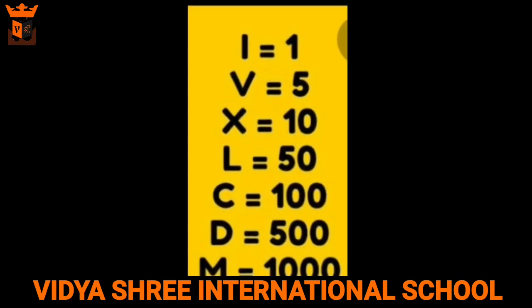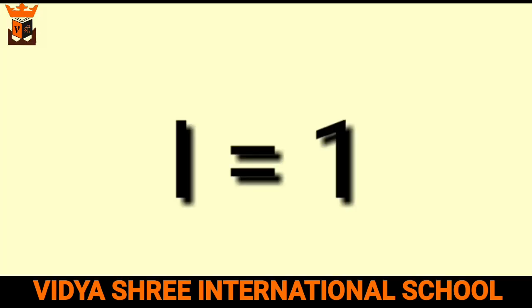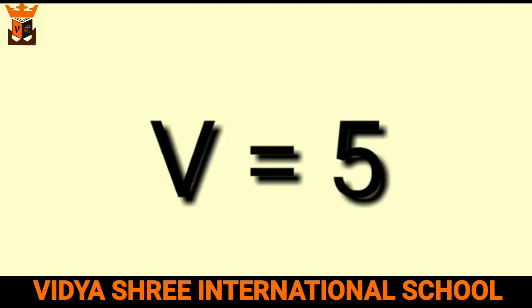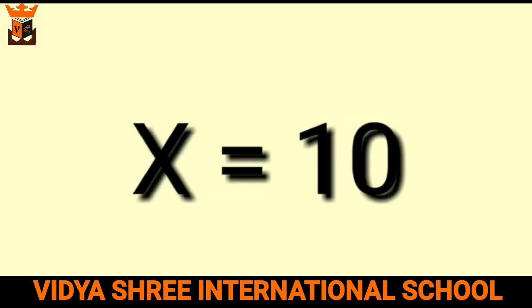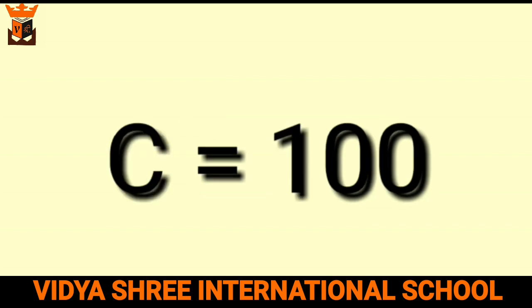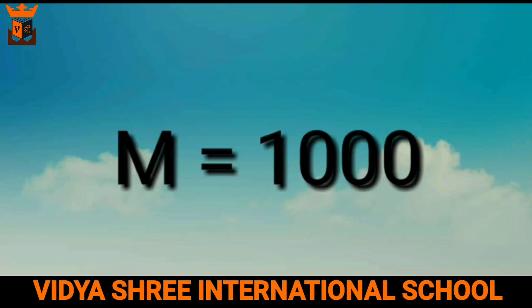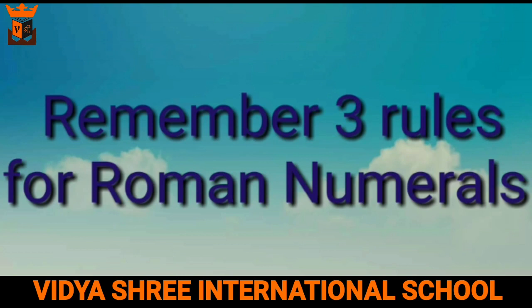Here are the letters used to write the numbers. The symbol I is equal to 1, V is equal to 5, X is equal to 10, L is equal to 50, C is equal to 100, D is equal to 500, and M is equal to 1000. We need to remember 3 rules while writing Roman numerals.